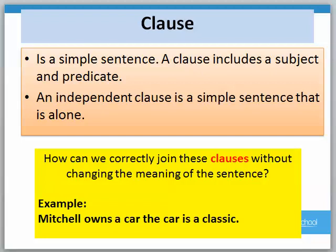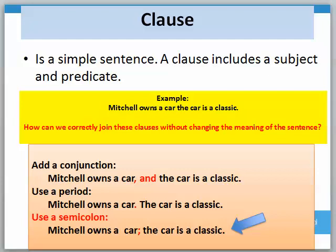Our next grammar review is a clause. A clause is a simple sentence — it has a subject and predicate. An independent clause is a simple sentence that stands alone. Looking at this example: 'Mitchell owns a car. The car is a classic.' How can we correctly join these clauses without changing the meaning? We could add a conjunction: 'Mitchell owns a car, and the car is a classic.' We could use a period to make two separate sentences. Or we could use a semicolon: 'Mitchell owns a car; the car is a classic.' All three are correct, but pay special attention to the semicolon because you will see this specifically on your exam.